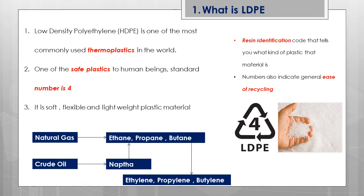The number 4 is a resin identification number. It helps the end user identify which material is being used in the product, and it also explains how suitable the material is for recycling. A lower number means it is more easily recyclable, while a higher number means it is tougher or not able to recycle. The numbers vary from 1 to 7, and LDPE is number 4.